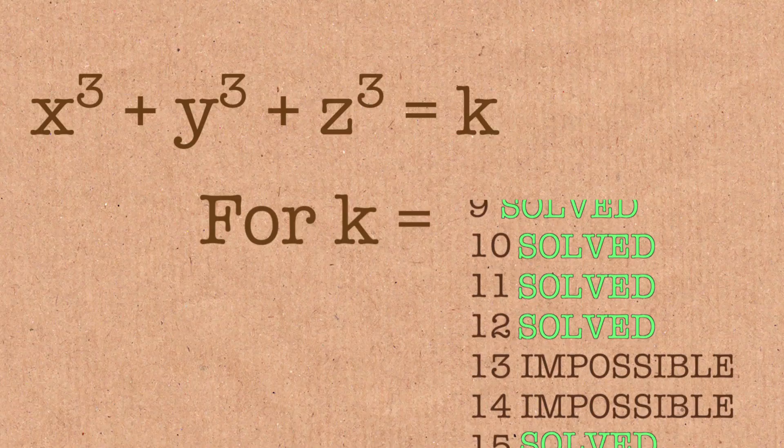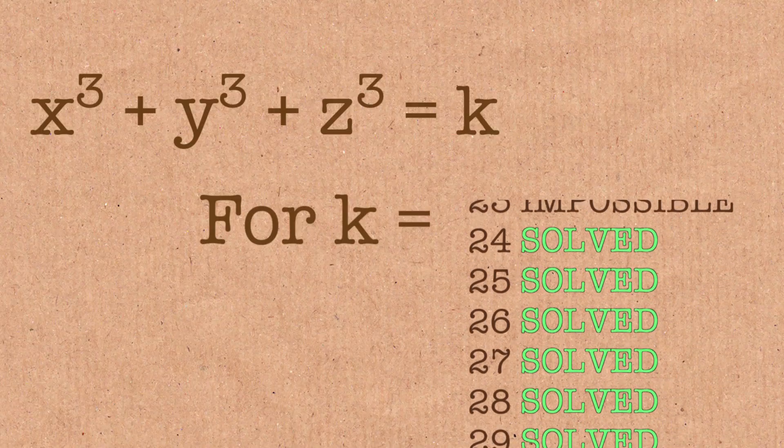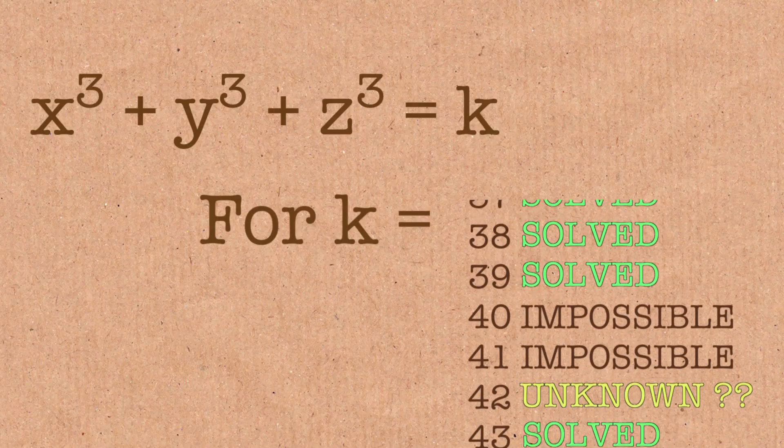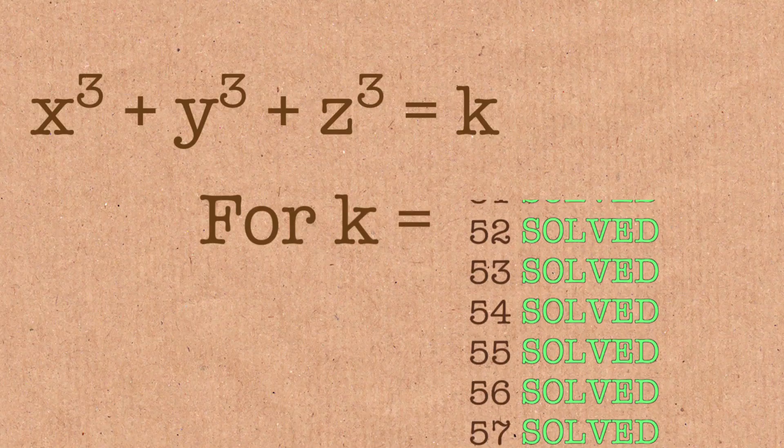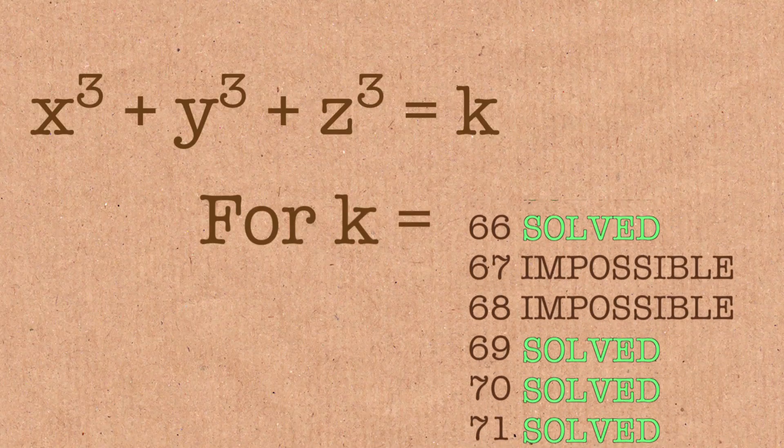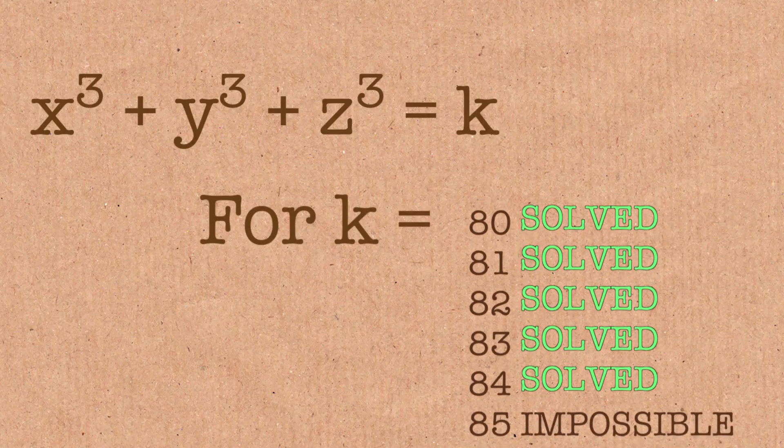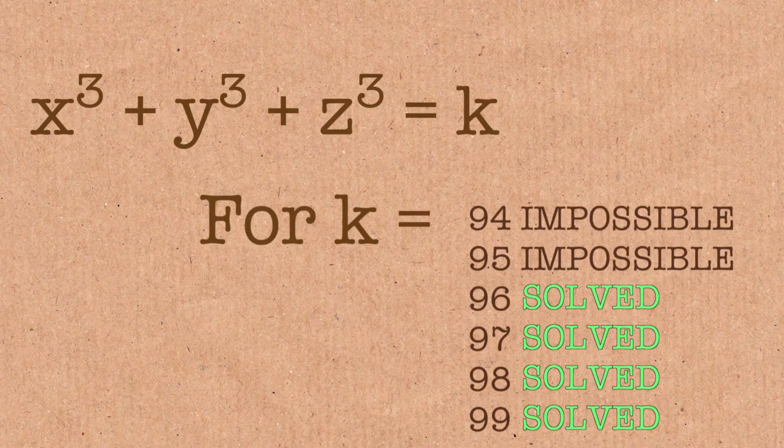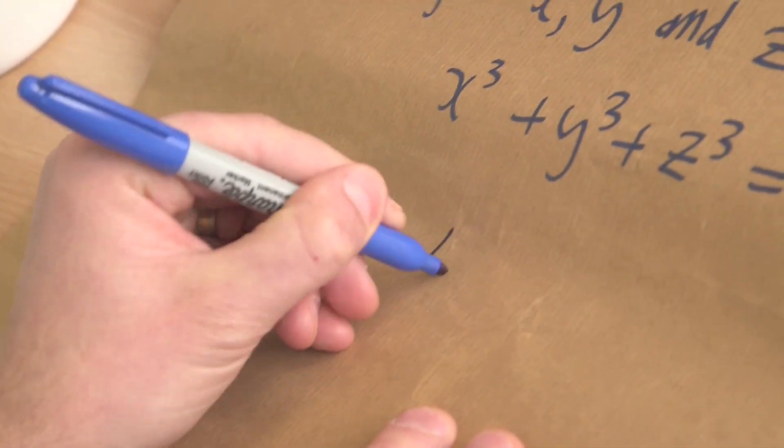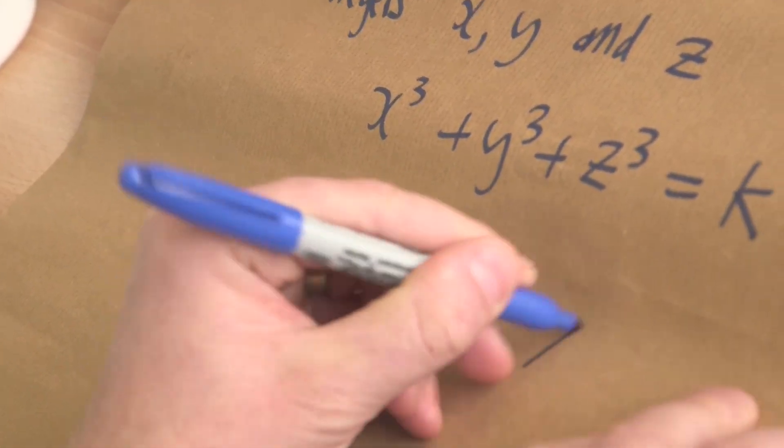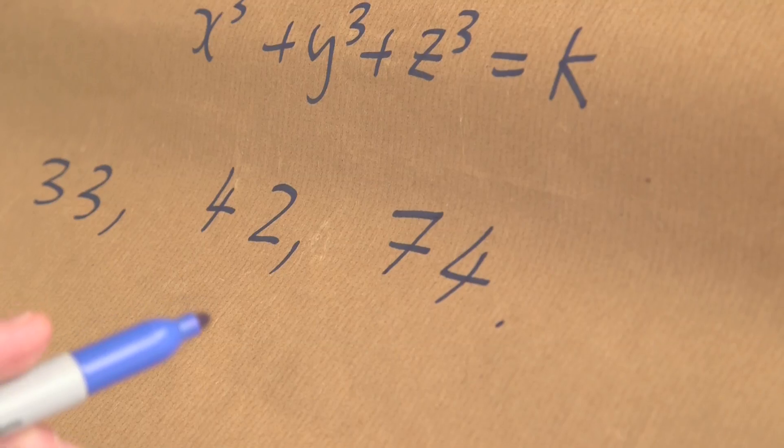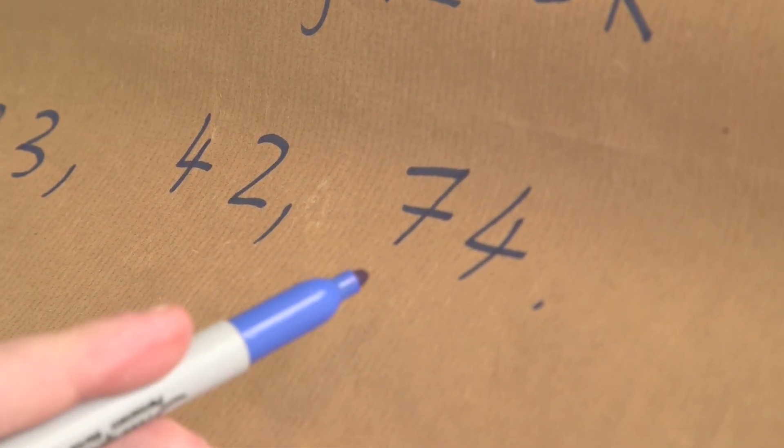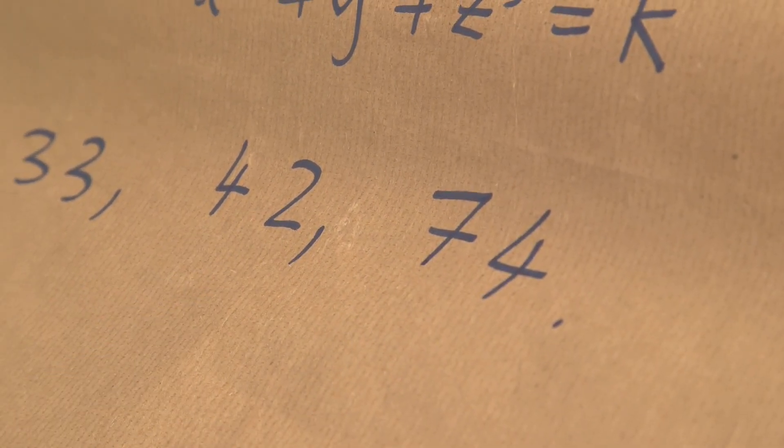If we just look at all the integers between 1 and 99, as of last time there were only three integers on that list for which we didn't have an answer about whether they could be written as a sum of three cubes or not, and those were 33, 42, and 74.